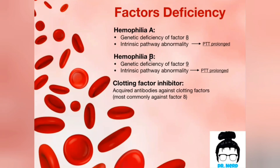Hemophilia B is exactly the same as hemophilia A, but in hemophilia B, factor IX is the one involved. A way to differentiate between them is by remembering that A is followed by B in the alphabet, and VIII is followed by IX. How to treat them? We just replace the missing factors — in hemophilia A we replace factor VIII, and in hemophilia B we replace factor IX.